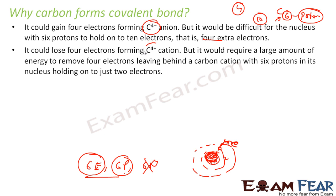The other option for carbon is to give away four electrons, which would leave it with only two electrons and make it stable. But it won't be able to lose four electrons because removing electrons requires energy, and to remove four electrons from carbon would require huge energy — that is very difficult. So the option of losing four electrons is also gone. Carbon can neither take four electrons nor give four electrons.